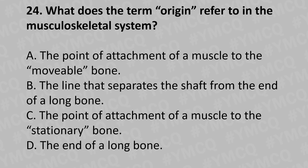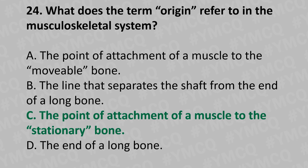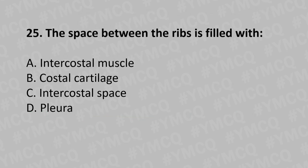Moving to our 24th question: What does the term 'origin' refer to in the musculoskeletal system? Option A: the point of attachment of a muscle to the movable bone, Option B: the line that separates the shaft from the end of the long bone, Option C: the point of attachment of a muscle to the stationary bone, Option D: the end of a long bone. The answer is Option C: the point of attachment of a muscle to the stationary bone.